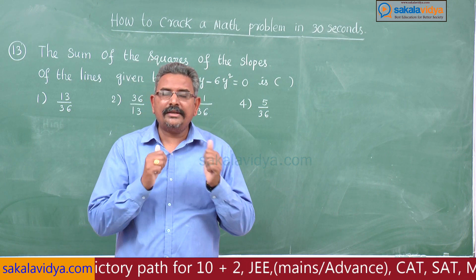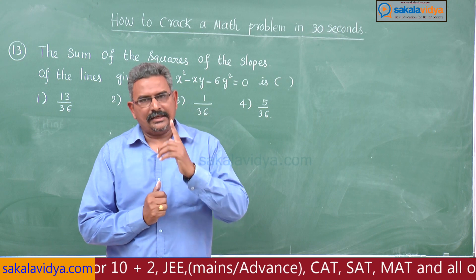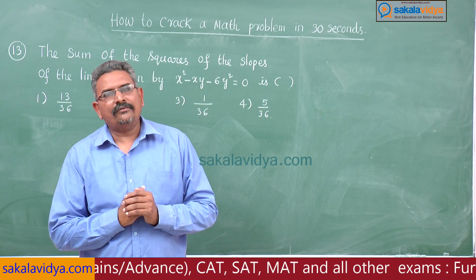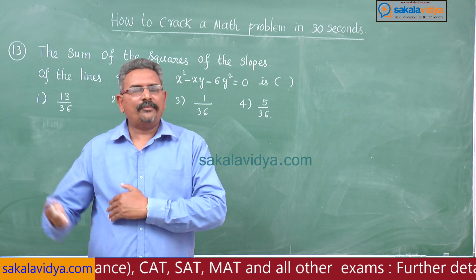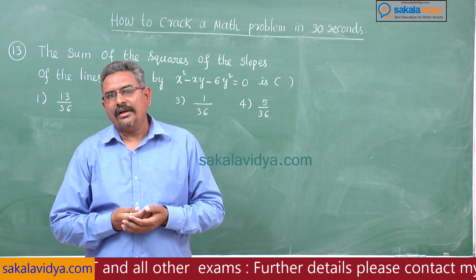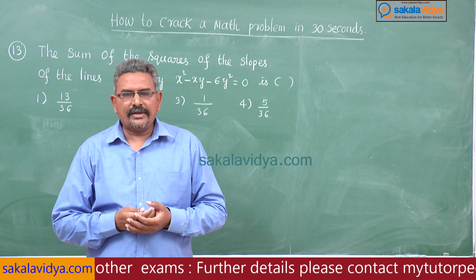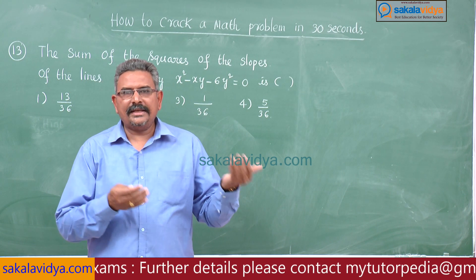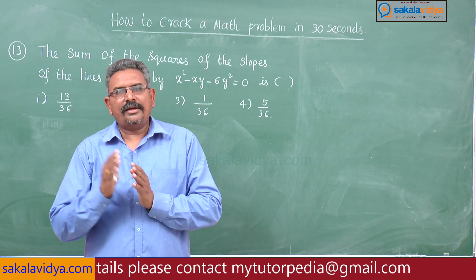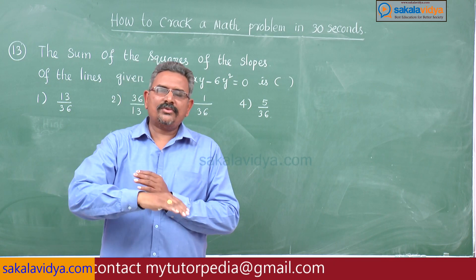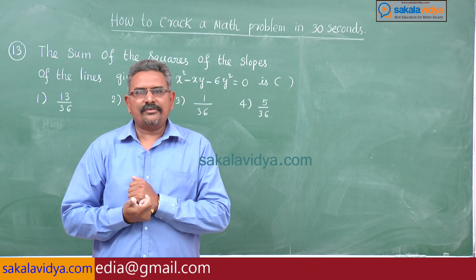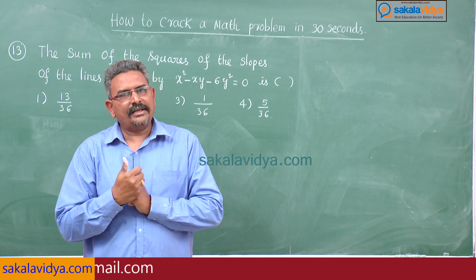To find m₁² + m₂², we first need m₁ + m₂ and m₁m₂, which we have practiced in previous episodes. Since m₁ and m₂ are roots of bm² + 2hm + a = 0, we can evaluate m₁ + m₂ and m₁m₂, and then use those to find the required value m₁² + m₂².